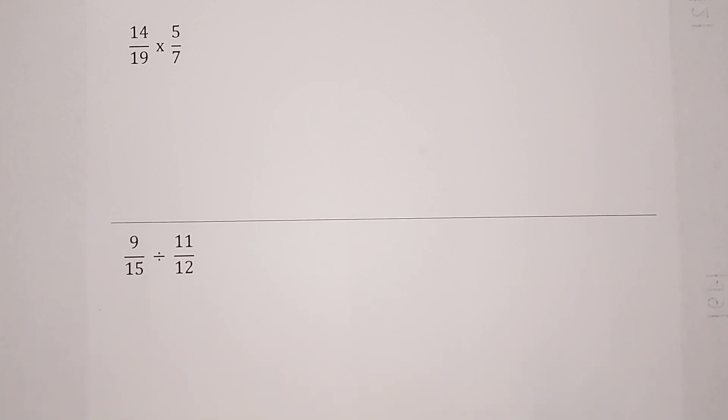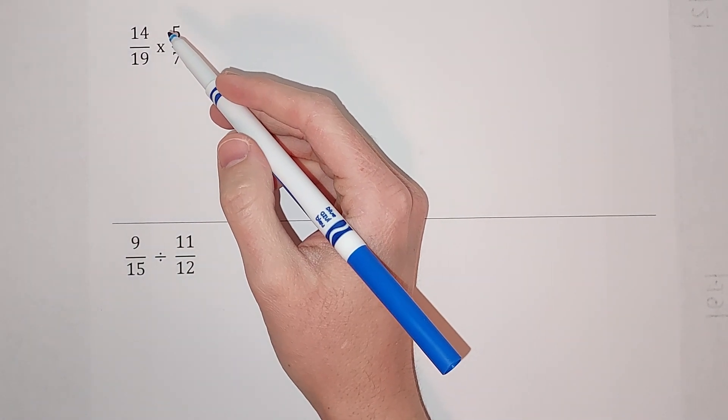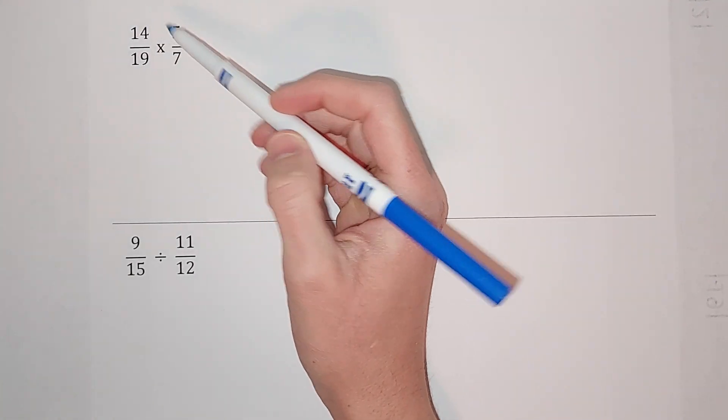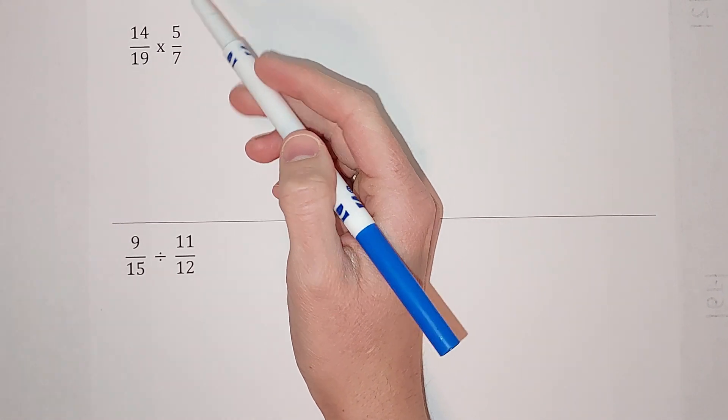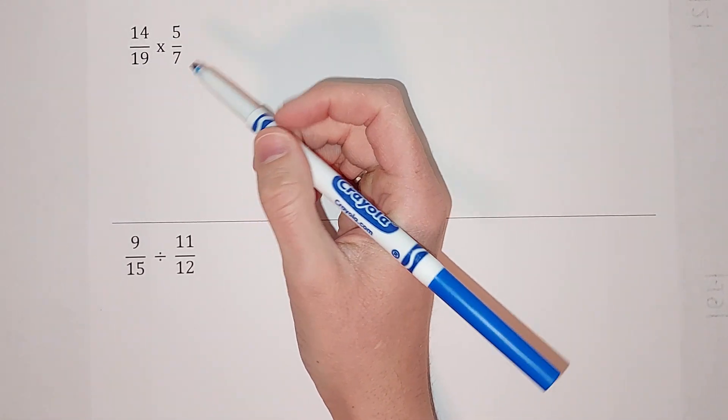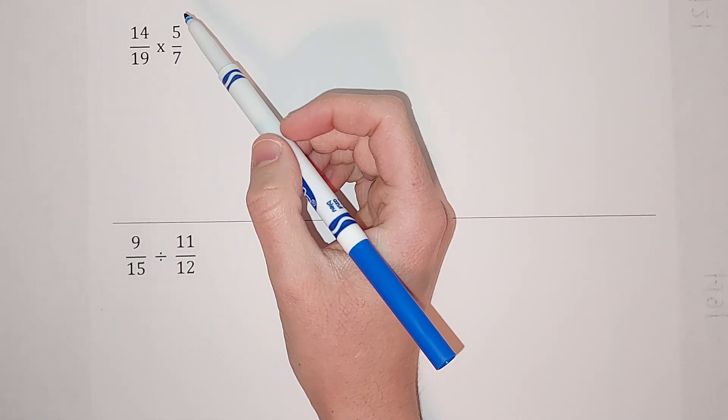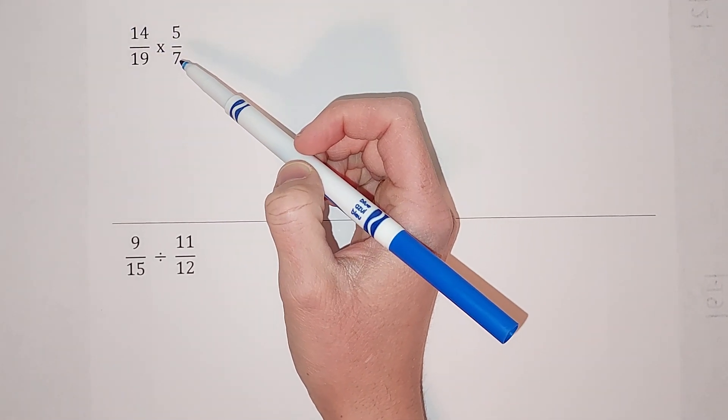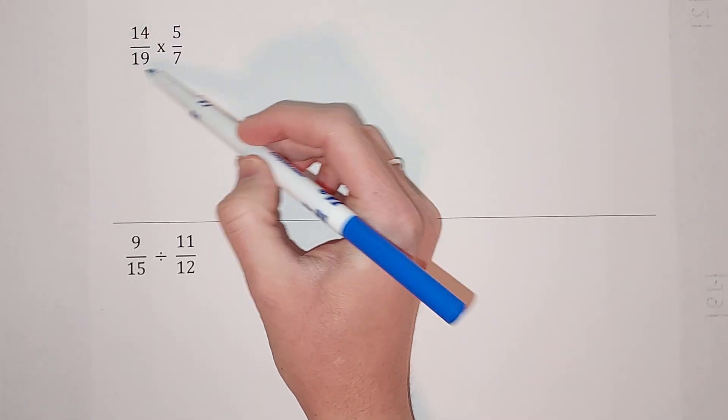When we multiply fractions, the denominators don't have to be the same. That's why it's so fantastic. We can just multiply. Basically what we do is multiply straight across and then simplify. If you want, before you multiply, you can see if anything cancels, if anything simplifies before that.